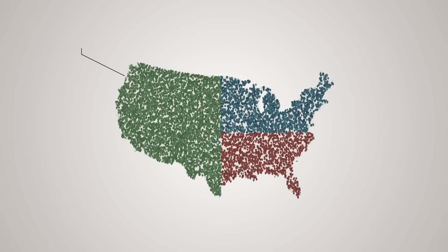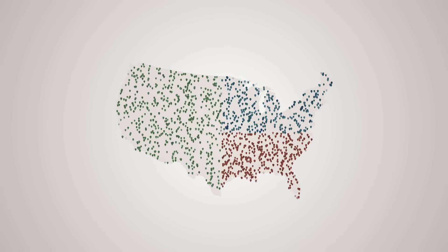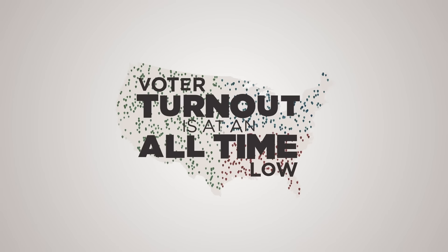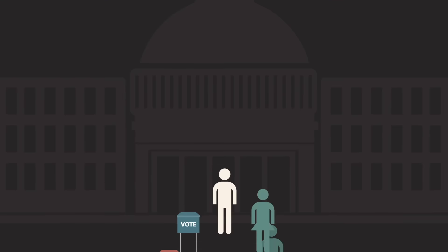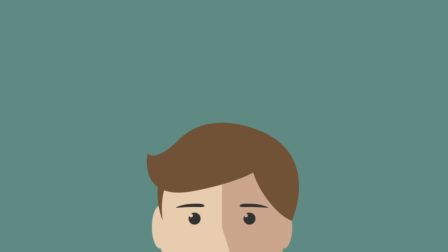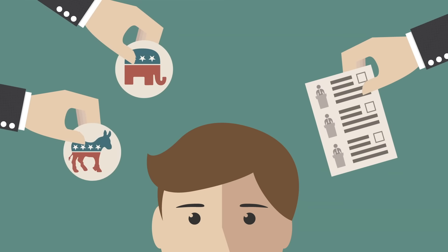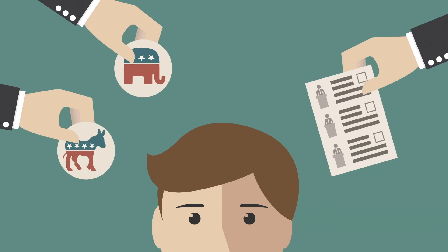Yet the largest group of voters in the country are independents who don't want to join or support either party. That's one important reason why voter turnout is at an all-time low. The reality is that we have a democracy where you have to choose between your right to vote and your right to not join one of the two major political parties.